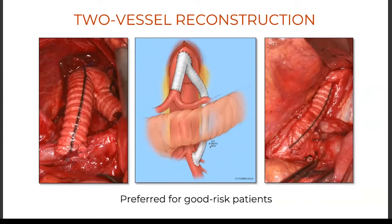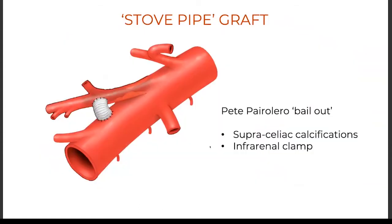Here is the final view of the two-vessel supraceliac hepatic and SMA bypass — our favorite option for good-risk patients selected for open reconstruction. There are other alternatives: Peter Pirolero, trained by DeBakey and Crawford, had a stovepipe reconstruction option as a bailout after aortic reconstruction when there was no suitable inflow. Another option — championed by the Oregon group, Dr. John Porter — was the iliomesenteric bypass, a suitable option for higher-risk patients with supraceliac or infrarenal calcification preventing safe clamp placement.